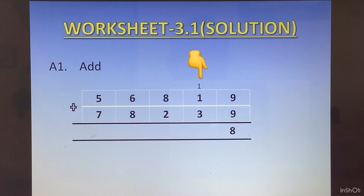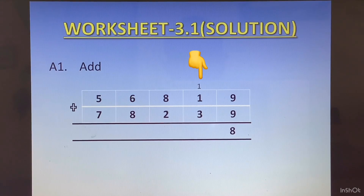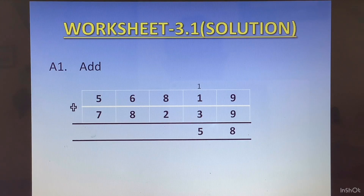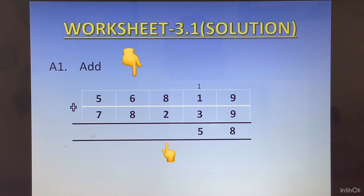Now the tens column. Here we have 1 plus 3, which is 4, and 4 plus 1 of the carry, we get 5. So we will write 5 in the tens column. After that in the hundreds column we have 8 plus 2. 8 plus 2 is 10, so 1 of 10 will go in the thousands place as carry and 0 will be written at the bottom of the hundreds column.